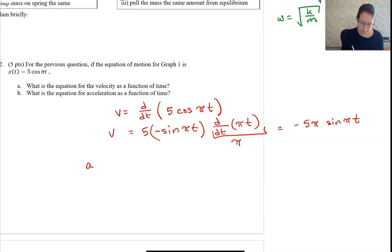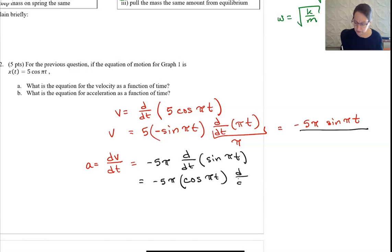Your acceleration is the derivative of the velocity. You're going to take the derivative of this. Minus 5π comes out, taking the derivative with respect to time of sine of πt, which means you take the derivative of sine, which is cosine of πt.